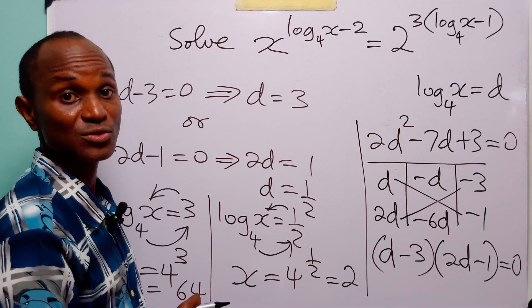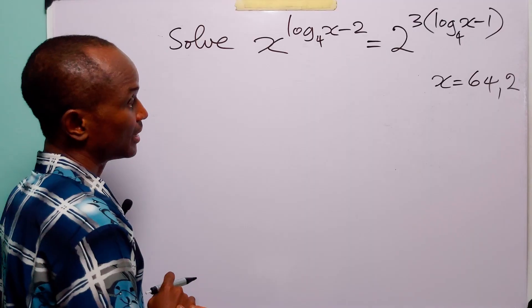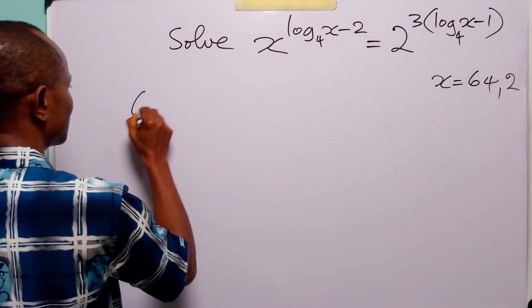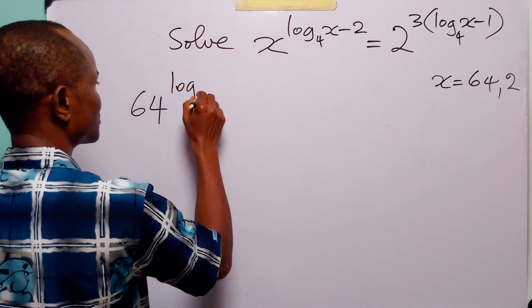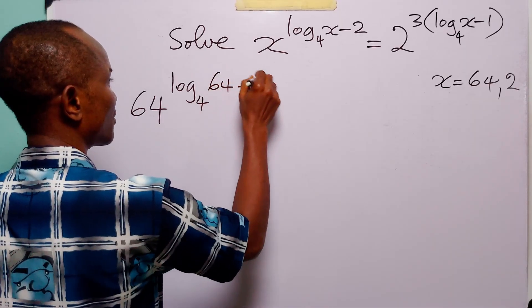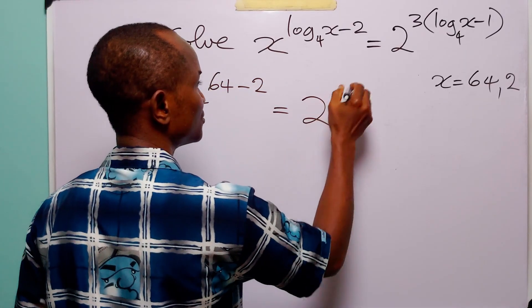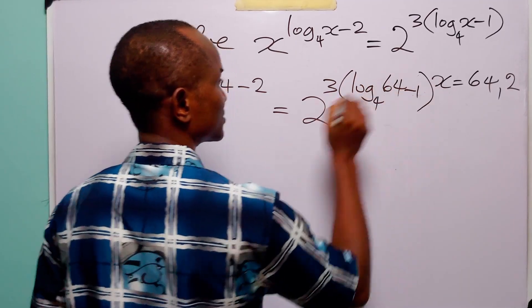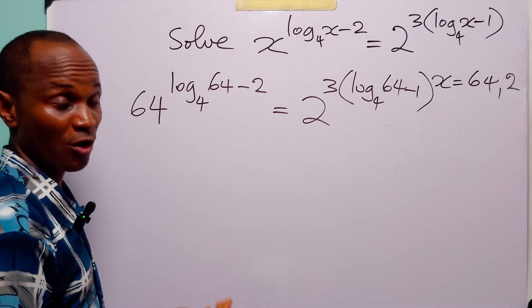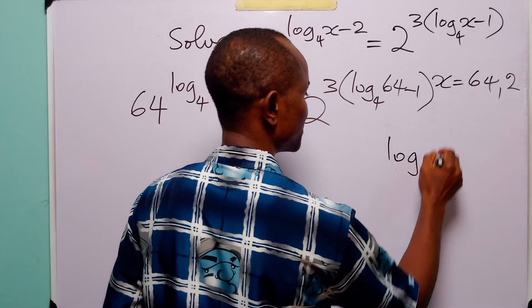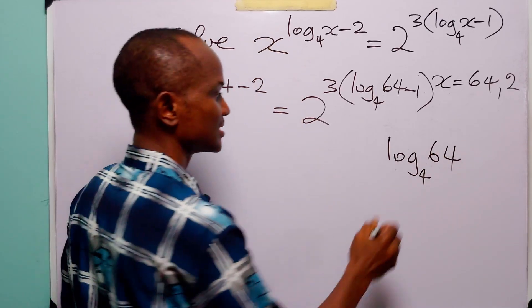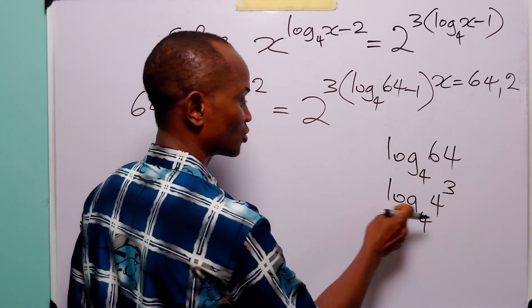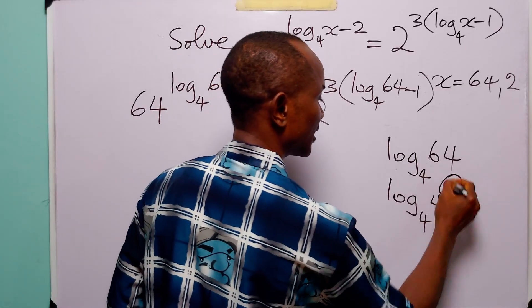So now let us check whether these two values actually satisfy the equation. When we substitute the first value of x, that is 64, into this exponential equation, we have 64 to the power log to base 4 of 64 minus 2 is equal to 2 to the power 3 times log to base 4 of 64 minus 1. Now let us evaluate log to base 4 of 64.